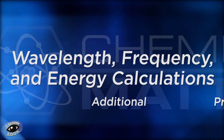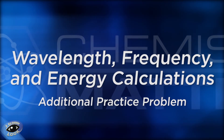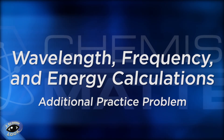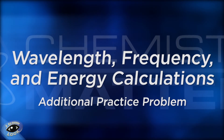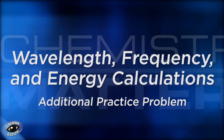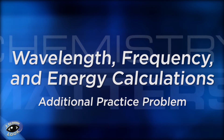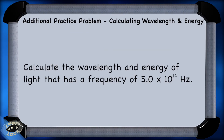We've done practice problems calculating frequency, wavelength, and energy using our constant of the speed of light. Now, why don't you try one on your own? I'll give you the problem — press pause and see if you can solve it, then press play to see if you got it right. Here's the problem: calculate the wavelength and energy of light that has a frequency of 5.0 times 10 to the 14th hertz.